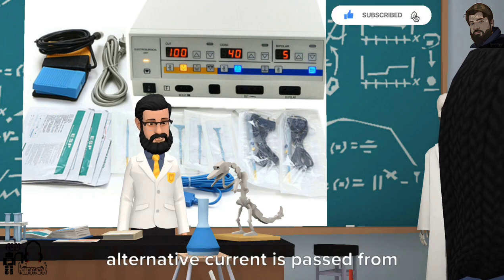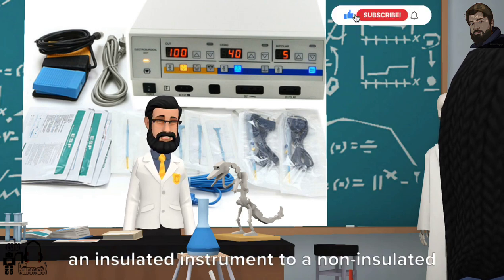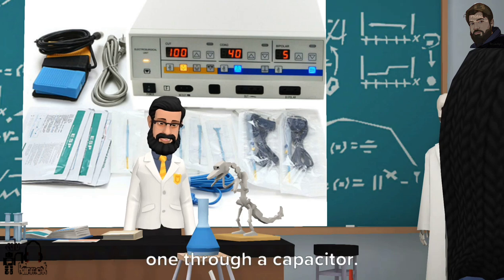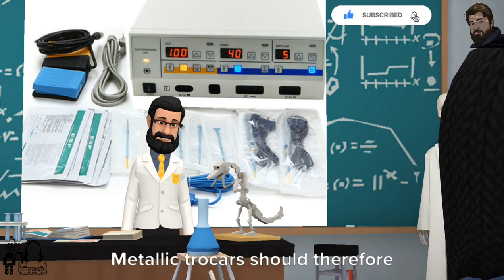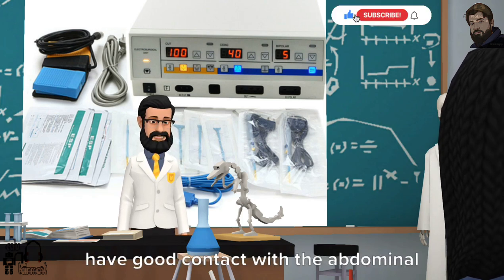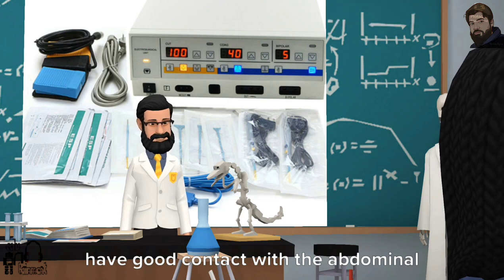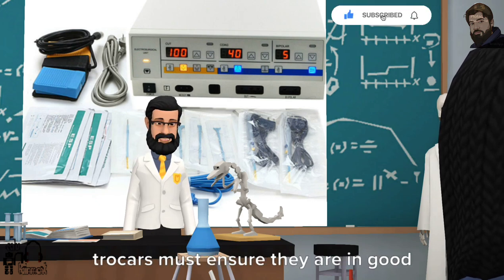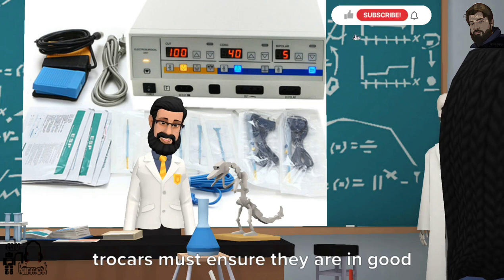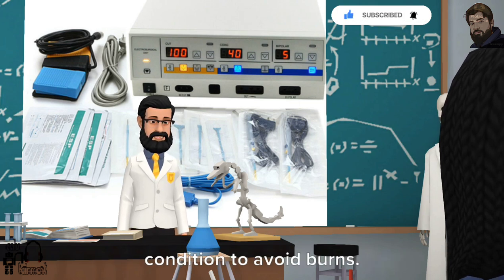Capacitive coupling can occur when alternative current is passed from an insulated instrument to an uninsulated one through a capacitor. Metallic trocars should therefore have good contact with the abdominal wall to avoid burns, and non-conducting trocars must ensure they are in good condition to avoid burns.